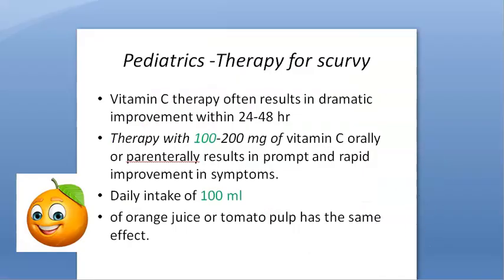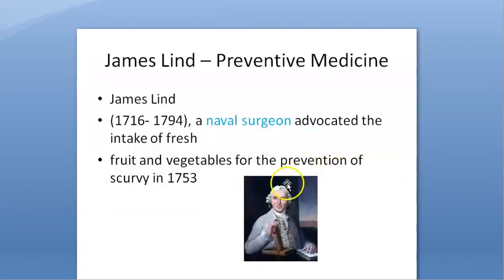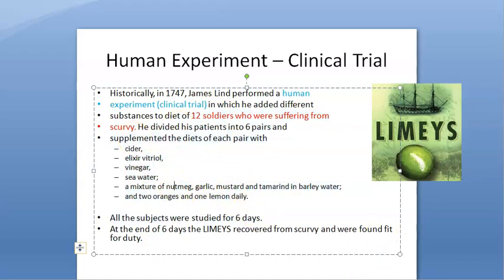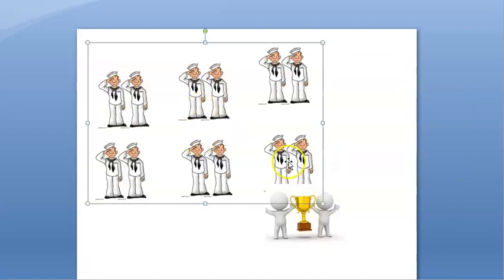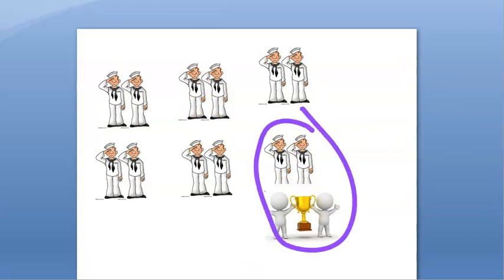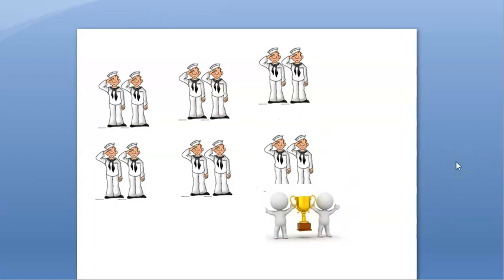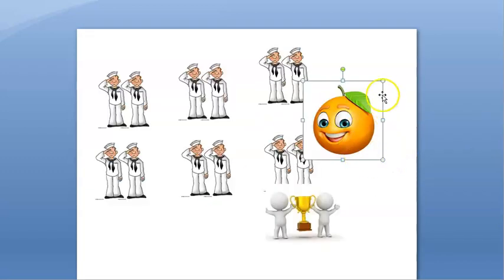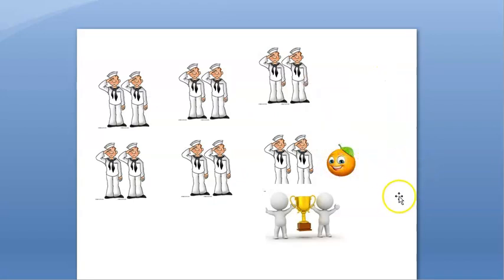James Lind, a naval surgeon, was on a ship. When sailors were falling ill, he divided them into six groups and gave each group different things. Only the group that received two oranges and lemons improved and recovered. That is why he concluded that vitamin C deficiency was causing the problem in the sailors.